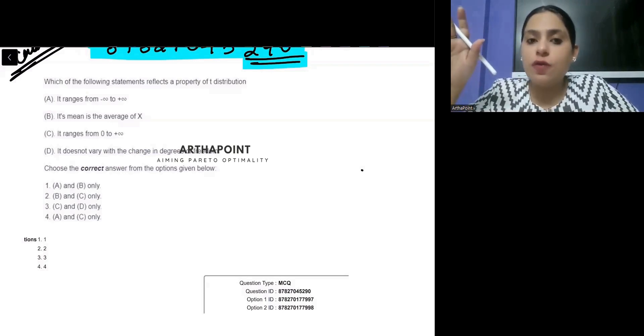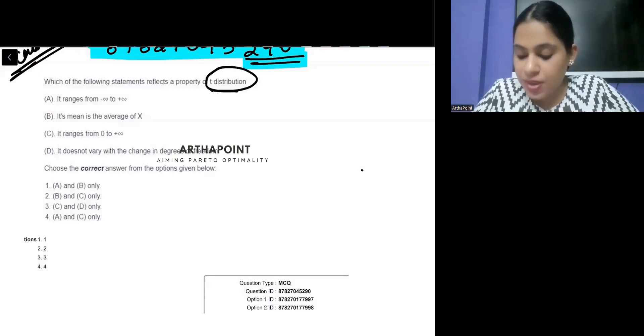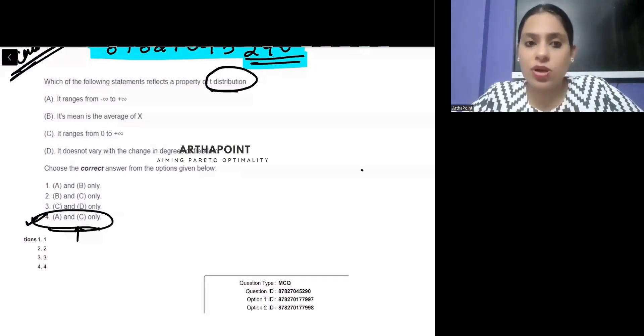in this question, it says which of the following statement reflects the property of T distribution and the correct answer given to you is 4 which means A and C only.